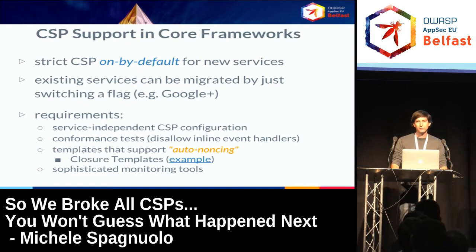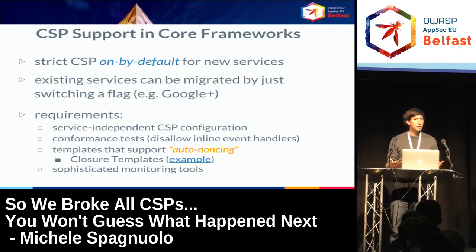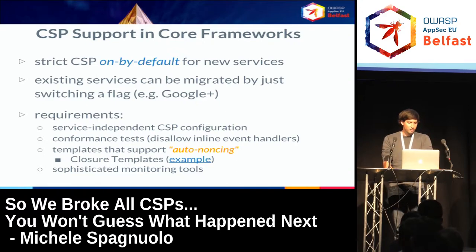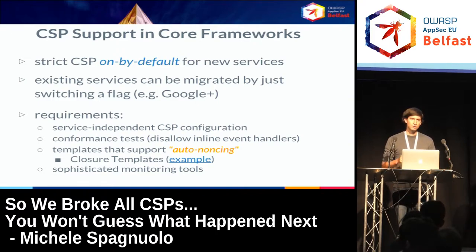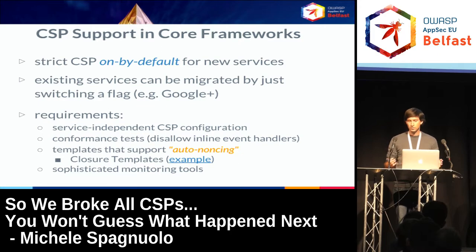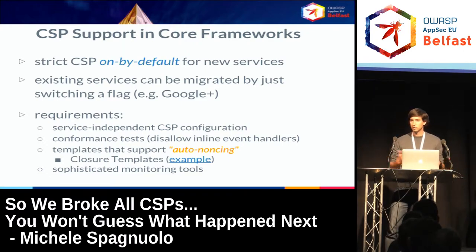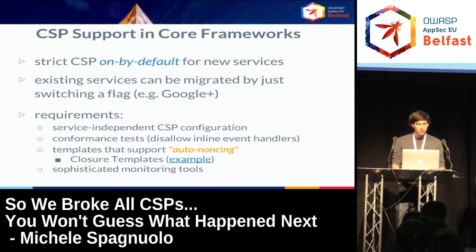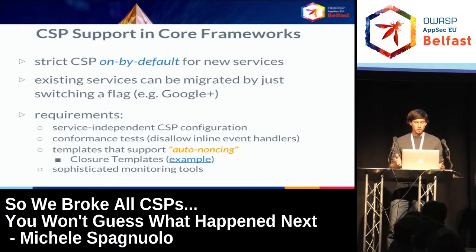There are a few requirements for this model to work, which may be somewhat Google-specific but may be useful for others. First, you need a service-independent CSP configuration. Previously with whitelists you had to tailor a CSP to each application — even each page — which is hard to maintain and doesn't scale. The nice property of nonce-based policies is they are all the same regardless of the service, so you don't have to maintain the policy itself on a regular basis.